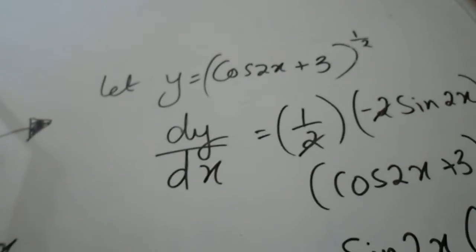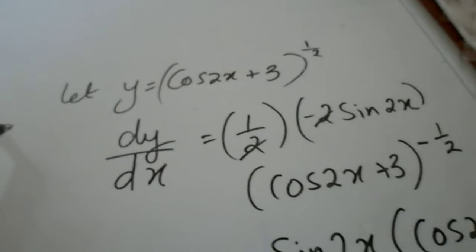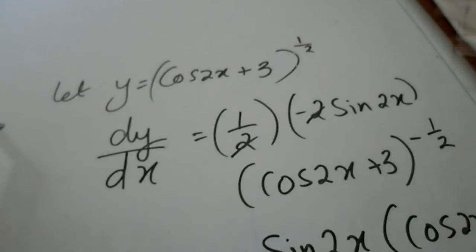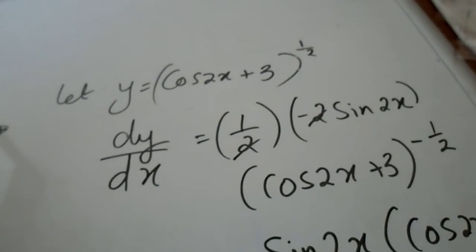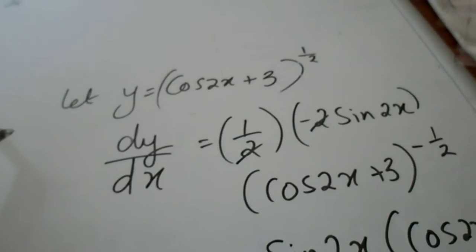Now we will move on to differentiating this question. So dy by dx equals half you apply the chain rule and differentiation here half multiplied by minus 2 sin 2x times cos 2x plus 3 to the power of minus half.